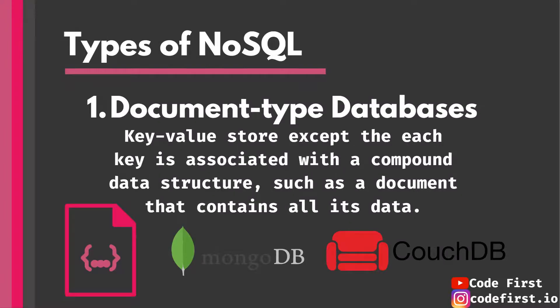So what are the types of NoSQL databases? NoSQL can be divided into several types. The most popular type is document-type databases, which follow a specific document format — it could be JSON, binary JSON, or XML. Some examples are MongoDB or CouchDB. They're similar to a key-value store, except the value in this case is a compound data structure — it could be a document. It can go nested very deeply, and it's very fast and efficient.